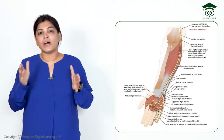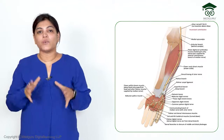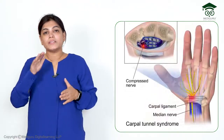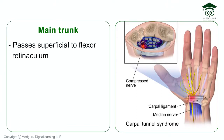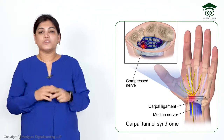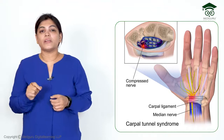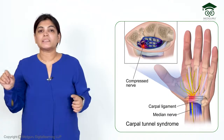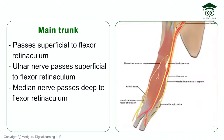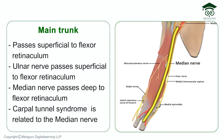An important point: the main trunk of the ulnar nerve passes superficial to the flexor retinaculum — not deep to it. The median nerve passes deep to the flexor retinaculum, which is why the median nerve gets compressed and carpal tunnel syndrome is related to the median nerve. The ulnar nerve escapes compression at this level by passing superficially.